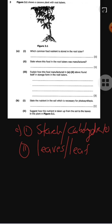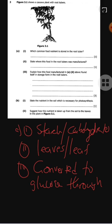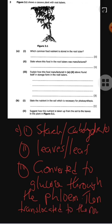Explain how this food manufactured above found itself in storage form in the root tubers. It was converted to glucose through the phloem, then translocated to the roots as starch. You know that starch is a common form of storage that is found in plants.